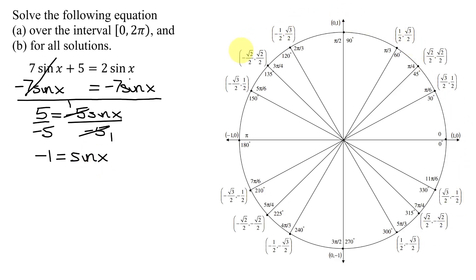Now remember, on the unit circle of these ordered pairs, the x-coordinate is always the cosine of that angle. The y-coordinate is the sine of that angle. I'm looking for the sine of x to be negative 1. That means I need the y-coordinate to be negative 1.